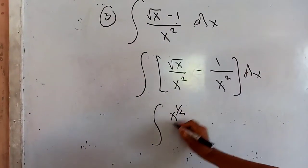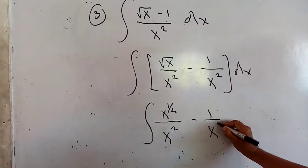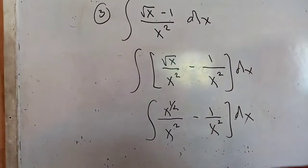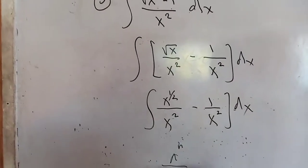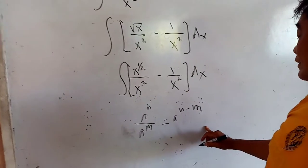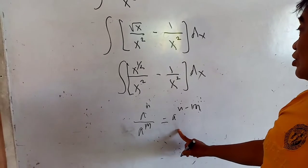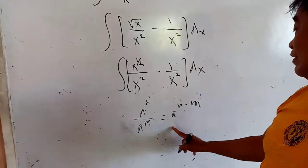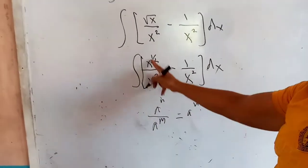That will be x to the one-half divided by x squared, minus 1 all over x squared, bracket times dx. From the rules of exponents, a to the m divided by a to the n will be equal to a to the (m minus n), provided that the value of m is larger than the value of n — meaning you subtract the exponents.